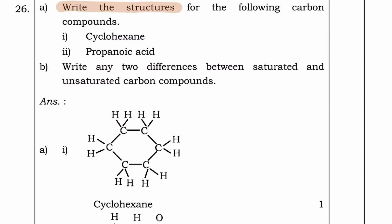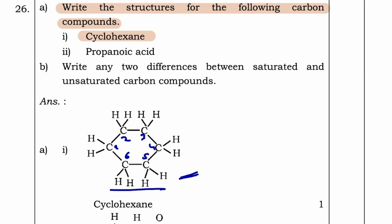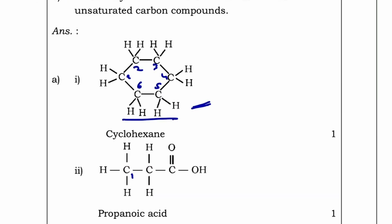Write the structures for the following carbon compounds. First, cyclohexane: 6 carbons in a circular model with 12 hydrogens — this makes cyclohexane (C₆H₁₂). Next, propanoic acid: propane means 3 carbons — 1, 2, 3 — and oic acid means COOH. This is the propanoic acid structure.